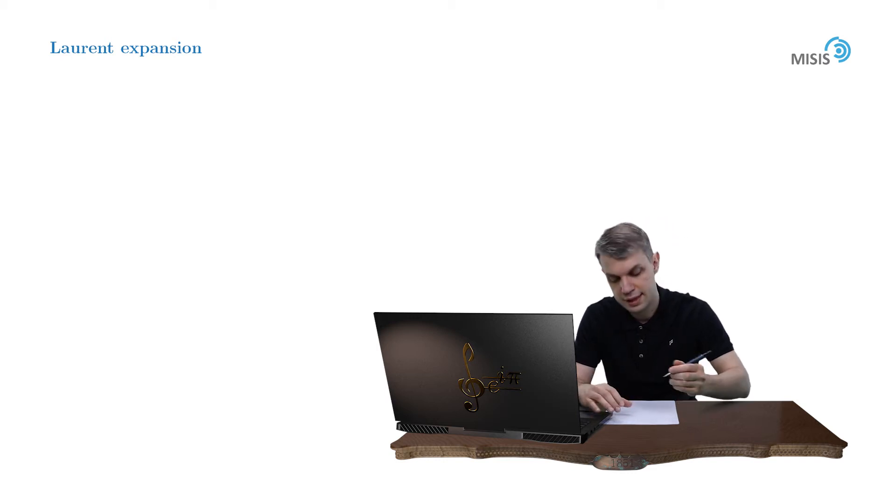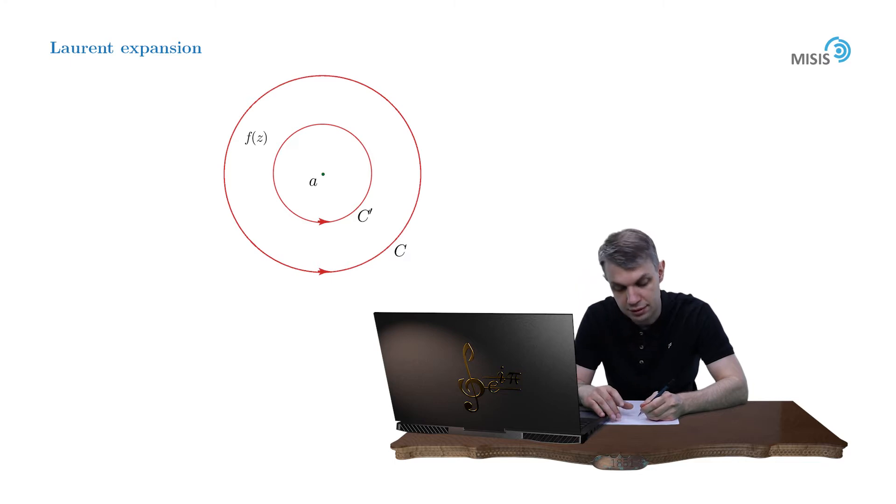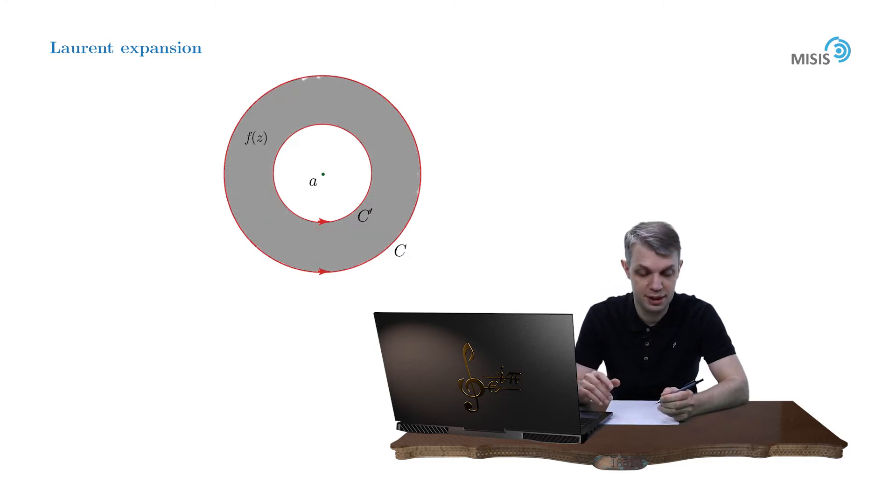Suppose we have two concentric circles, C' and C, and C' is inside C, centered at point A, and the function F of Z, which is analytic on these circles and between them. Now we have a planar double-connected region and, as you remember, we can write down the generalized Cauchy integral formula.